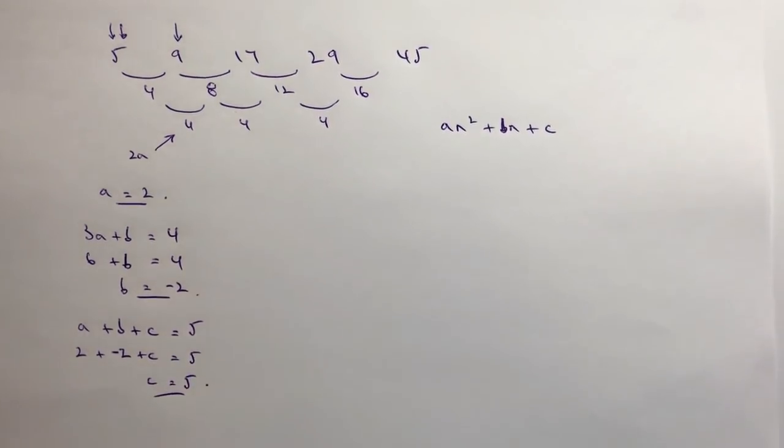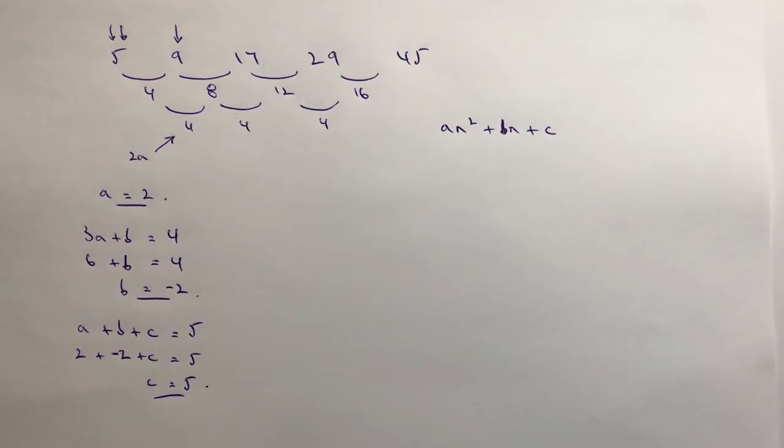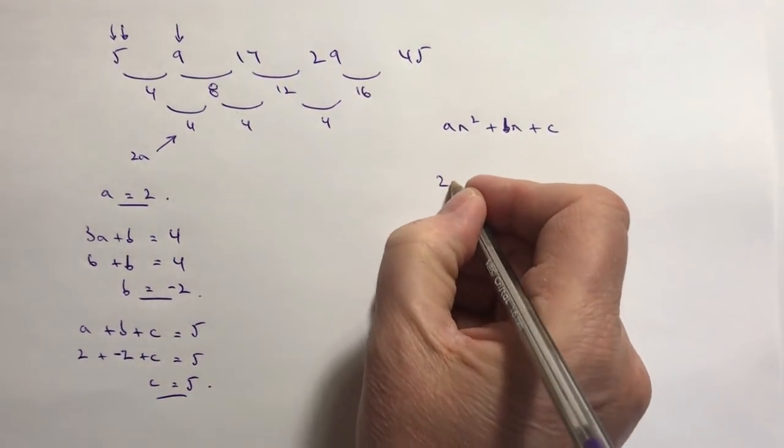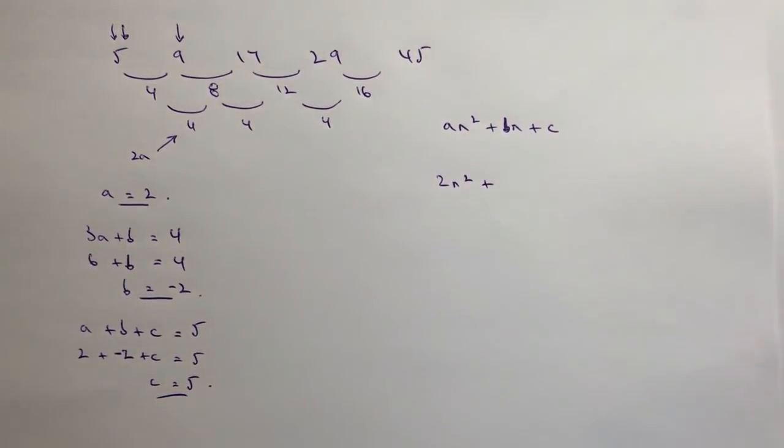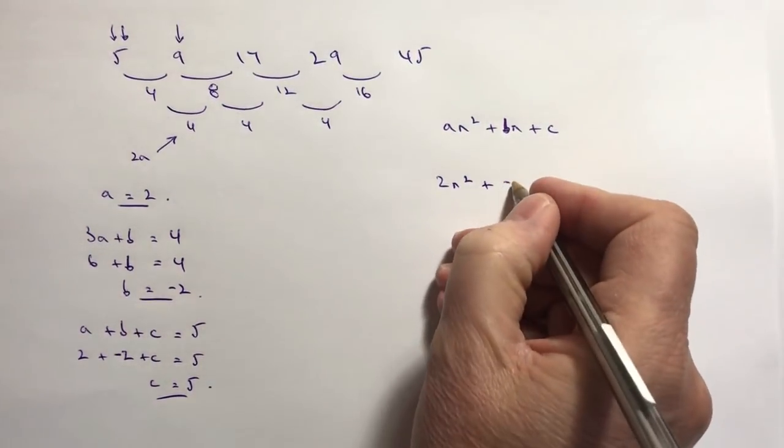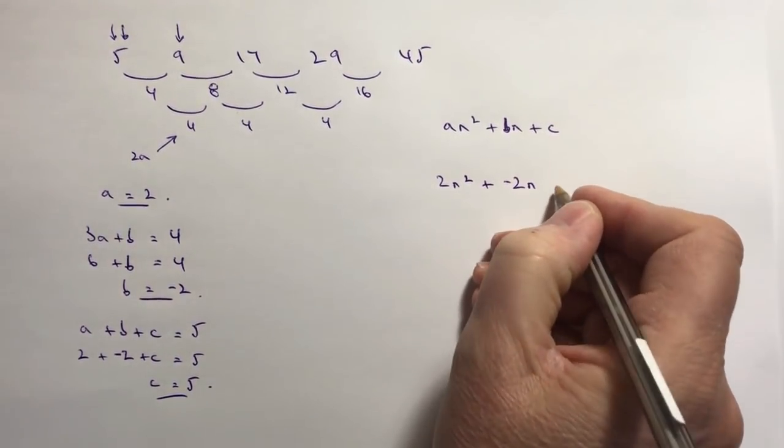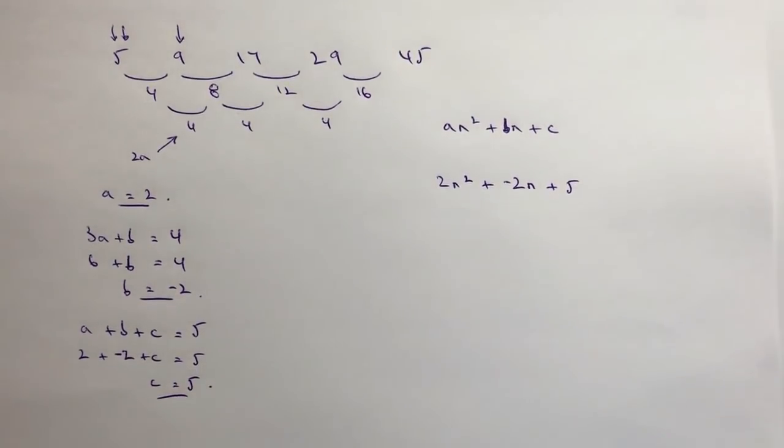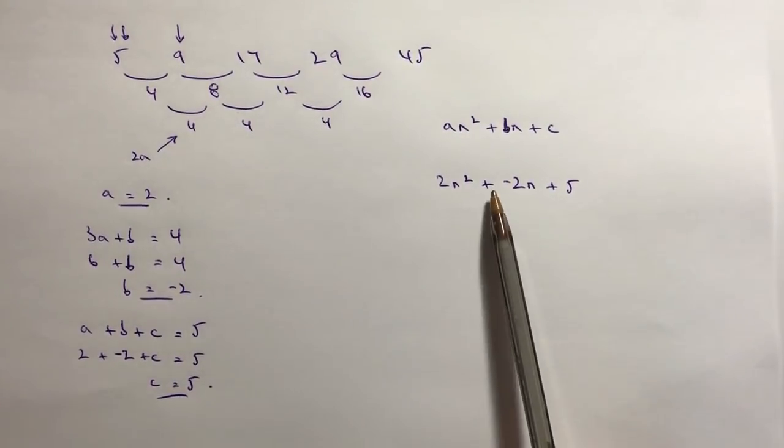And then we simply put it straight back into the formula. So in this particular case I'm going to say that a equals 2, so that's 2n² plus b which is -2, minus 2n, plus in this particular case c is 5.